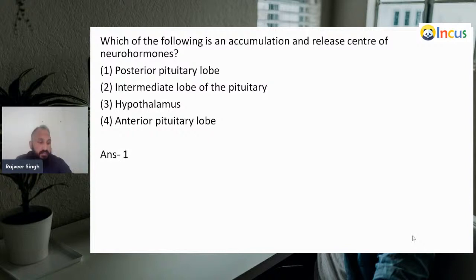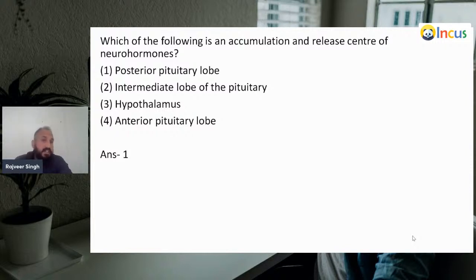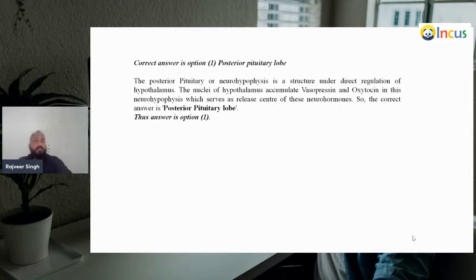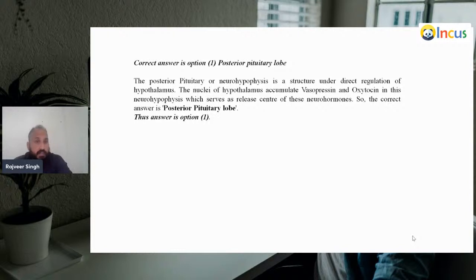Next question: which of the following is the accumulation and release center of neurohormones? Posterior pituitary lobe, anterior/intermediate lobe of pituitary, hypothalamus, or anterior pituitary lobe? Answer: posterior pituitary lobe. The posterior pituitary or neurohypophysis is under direct regulation of the hypothalamus. The nuclei of the hypothalamus accumulate vasopressin and oxytocin in the neurohypophysis, which serves as a release center for neurohormones. Correct answer: posterior pituitary lobe.